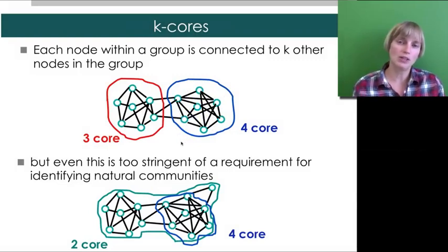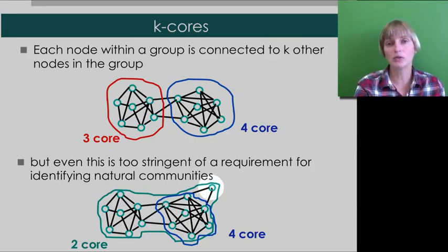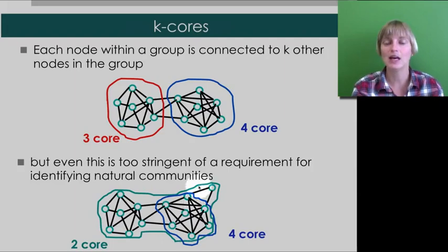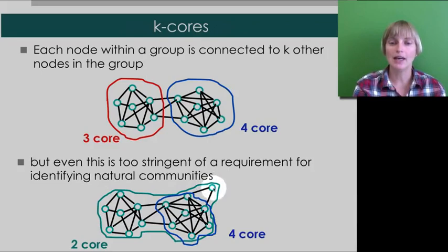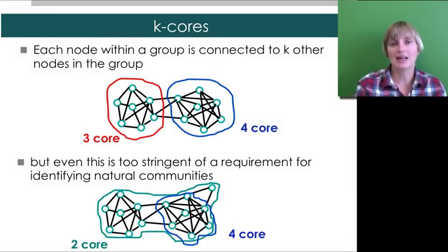What makes K-cores also not that robust is this example down here. Where you have a node that really should rightly belong with all the other nodes in this four core. But it has only two edges. And so, it can't be part of a four core. It would need at least four edges to do that. And so, the next core that it can join is a two core that then envelops both of these communities. And so, we would incorrectly leave this one out if we were looking for kind of meaningful communities. Of course, if you want to stick to the definition four core or bust, then yes, that node should be left out. But is that really what you want to get out of your community finding exercise?